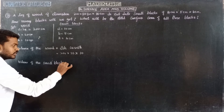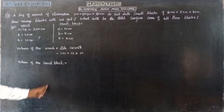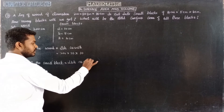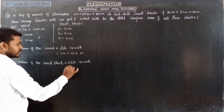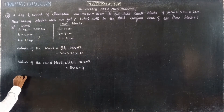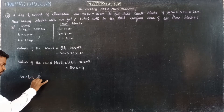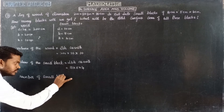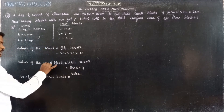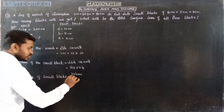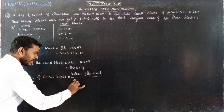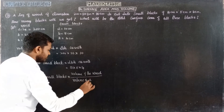The volume of the small block is equal to L × B × H cubic units, which is 10 cm × 5 cm × 4 cm. The number of small blocks is equal to the volume of the wood divided by the volume of one small block.